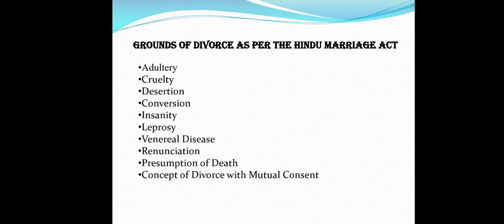The third ground is Desertion. Desertion means the permanent abandonment of one spouse by the other without any reasonable justification and without consent — in general, the rejection of the obligations of marriage by one party. In the case of Bipin Chandra Jasinbhai vs. Prahavati, the respondent left the house with the intention to abandon his wife. However, the defendant proved that even though he left with the intention to desert, he tried to come back but was prevented from doing so by the petitioner. Therefore, the defendant could not be held liable for desertion.